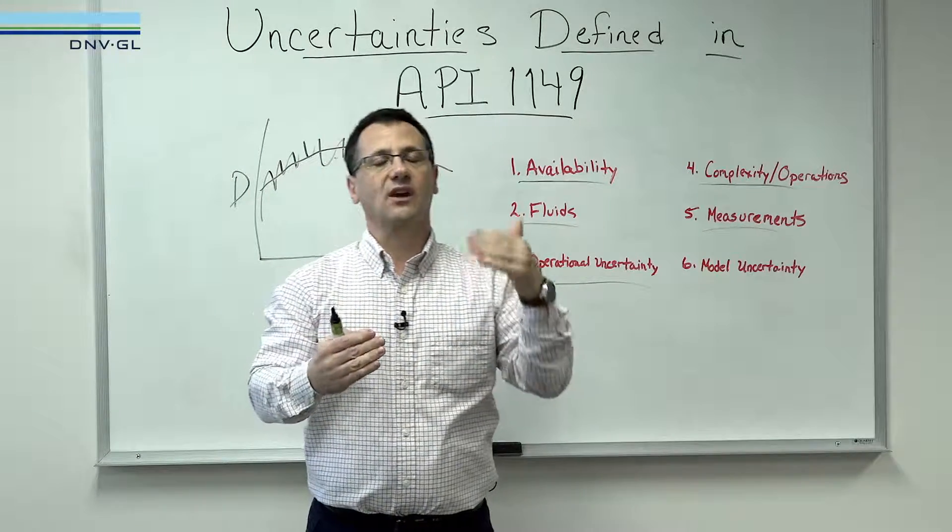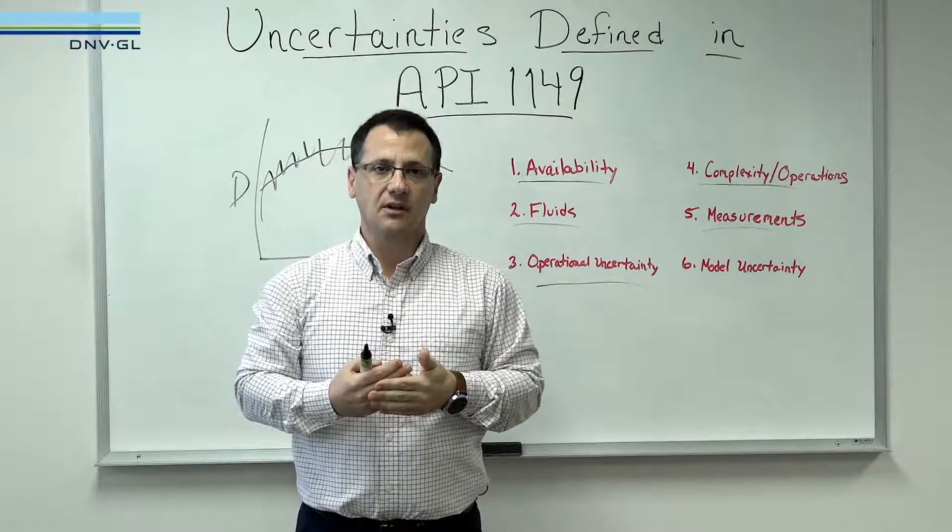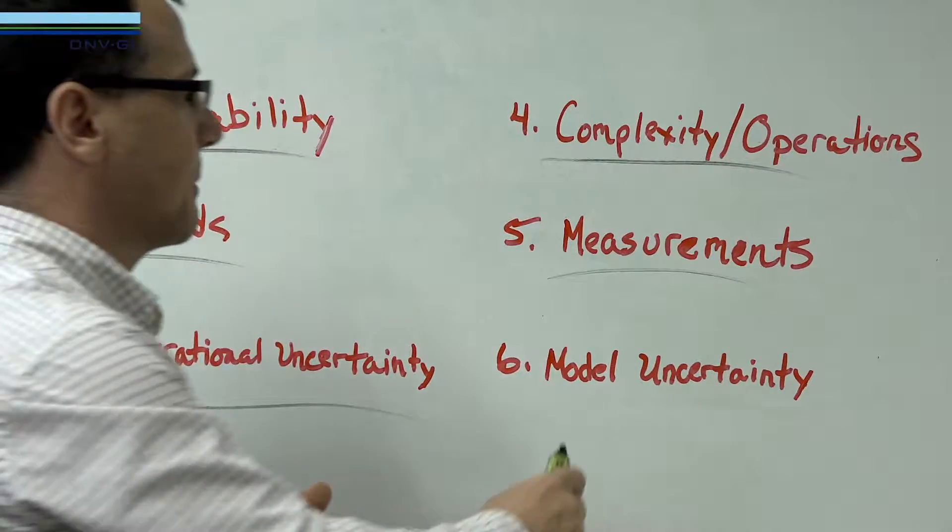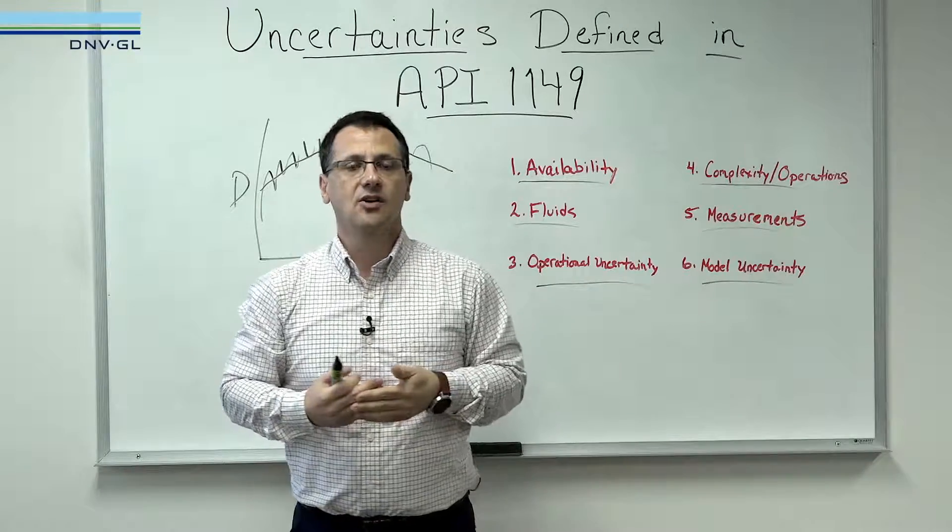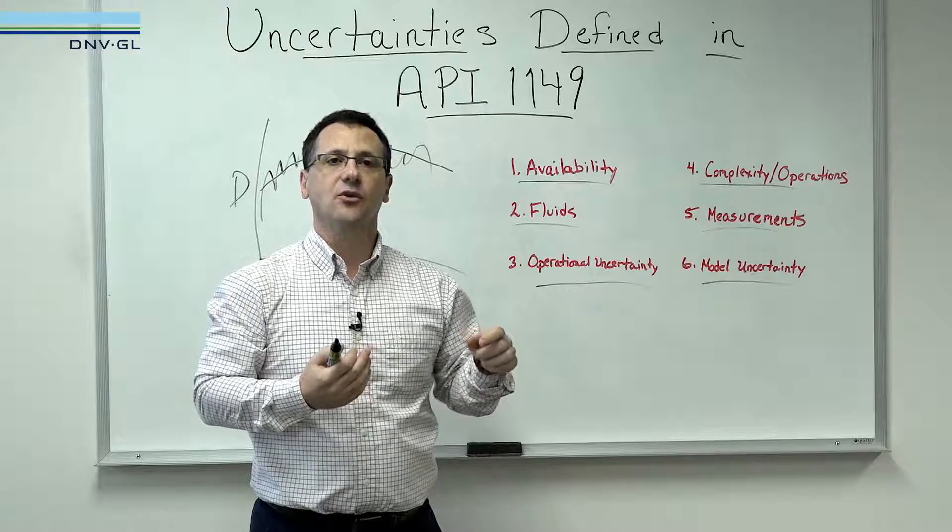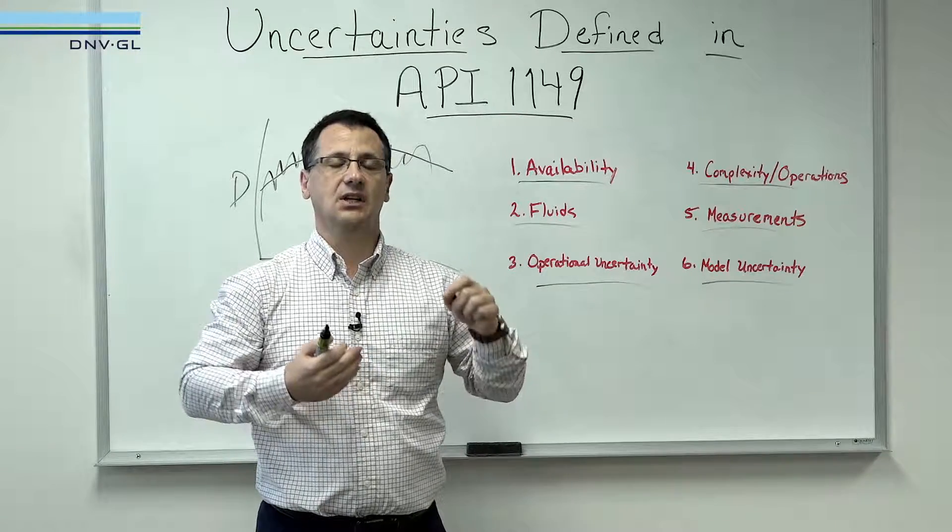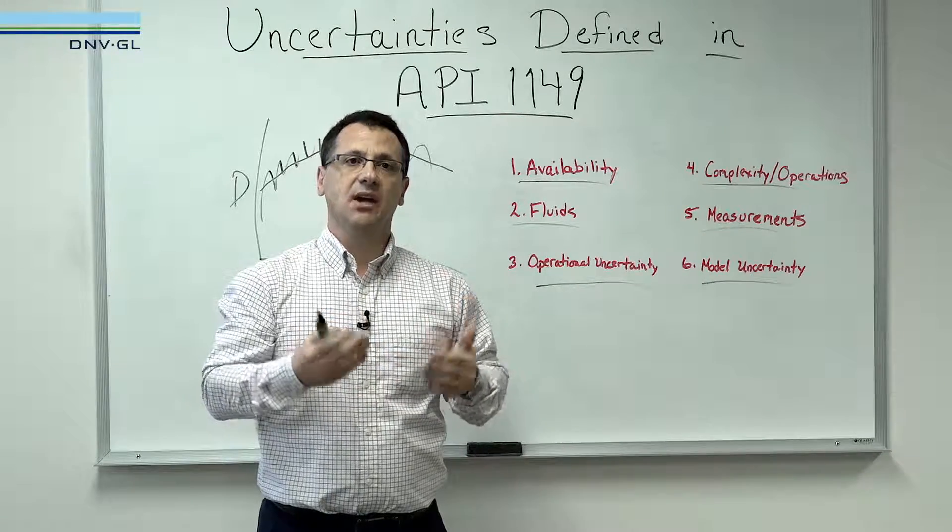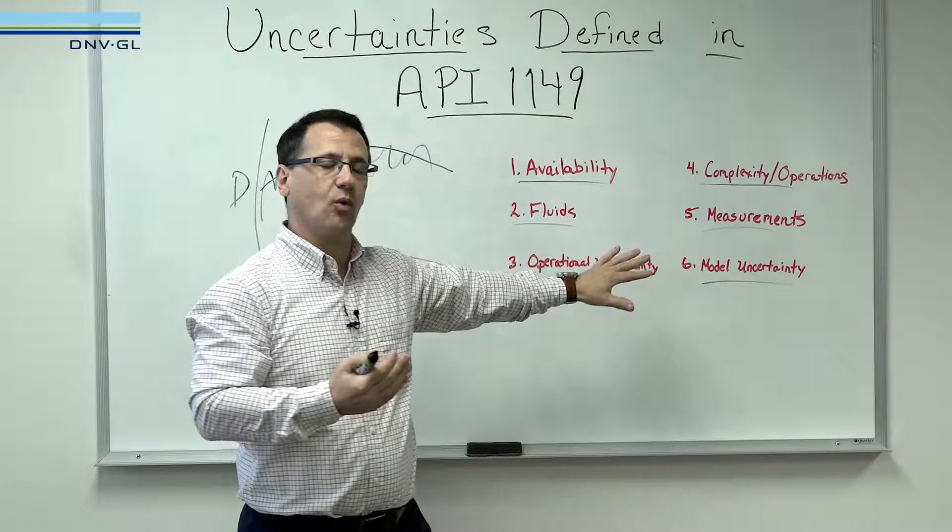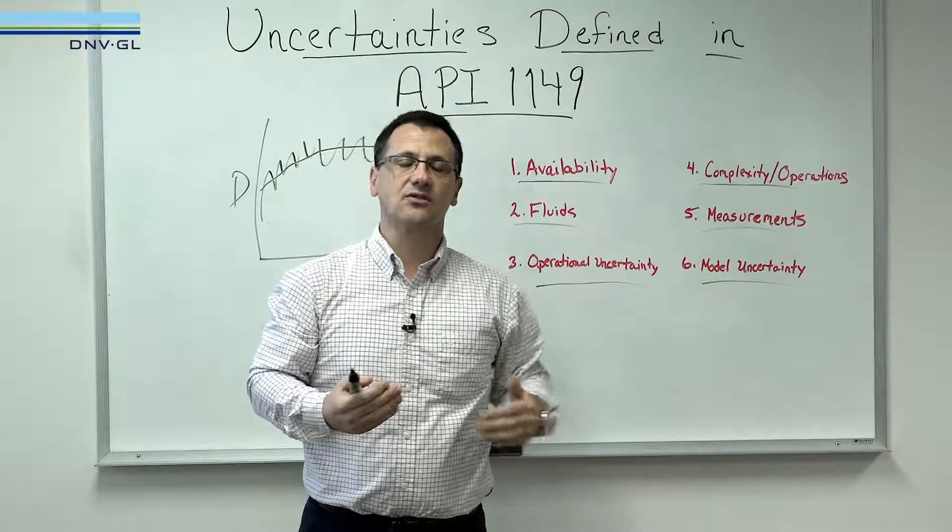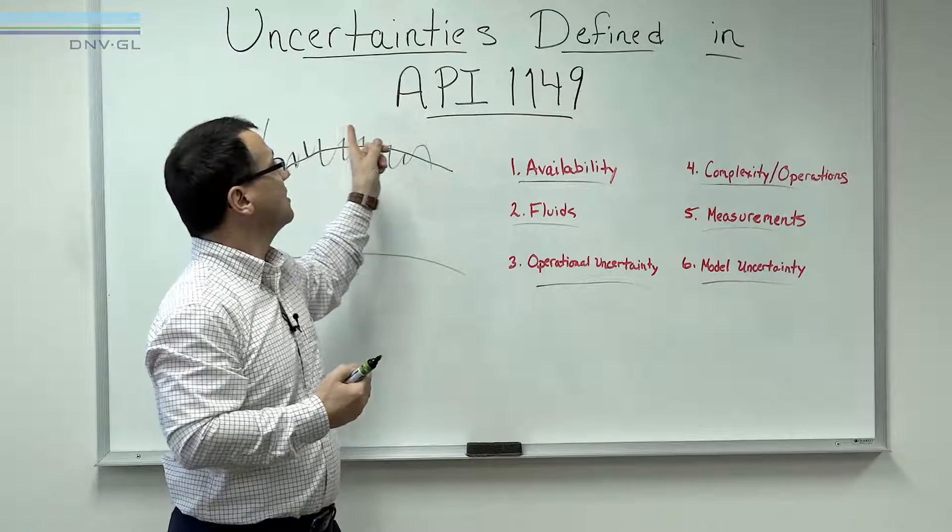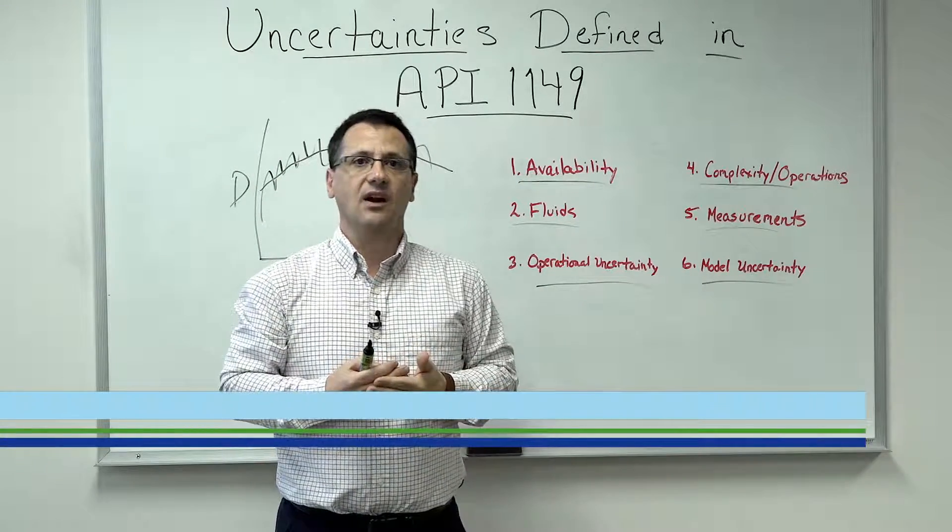Being able to normalize and recognize instrumentation out of calibration is important for accurate leak detection. And then model uncertainty. Quality data is important for calibrating the model so it accurately reflects the behavior of your pipeline. To emphasize, although all of these require more advanced calculations, data quality is the foundation for reducing the uncertainties defined in 1149. We'll see you next time.